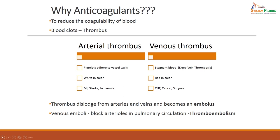As you know, the body has a defense mechanism that if there is bleeding, platelets get activated and form a thrombus in order to prevent bleeding. The question is: thrombus in artery versus thrombus in veins. If you take the thrombus in the artery, platelets adhere to the vessels, it is white in color, and most of the time in myocardial infarction, stroke, or any ischemic condition like transient ischemic attack, you find thrombus formation in arteries.